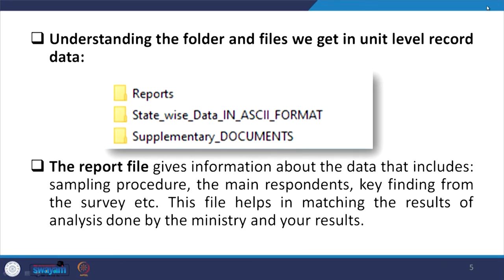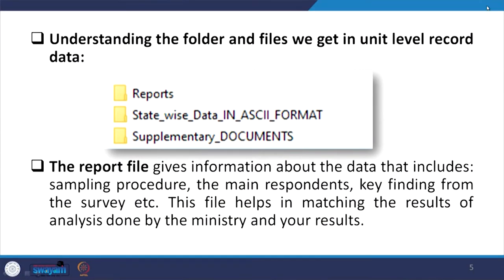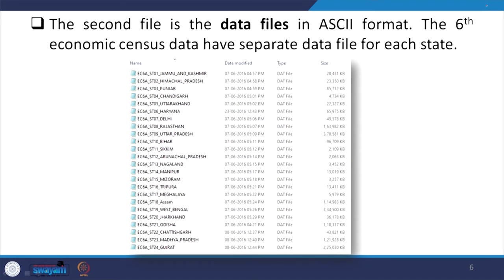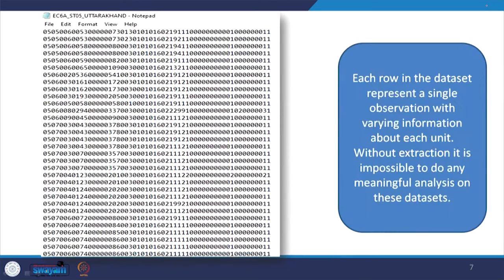The report file gives information about the data that includes sampling procedure, the main respondents, the key findings from the survey, et cetera. The file also helps in matching the results of analysis done by the ministry and your own results. These ASCII format files need to be extracted for our use. Each row in the dataset represents a single observation with varying information about each unit.